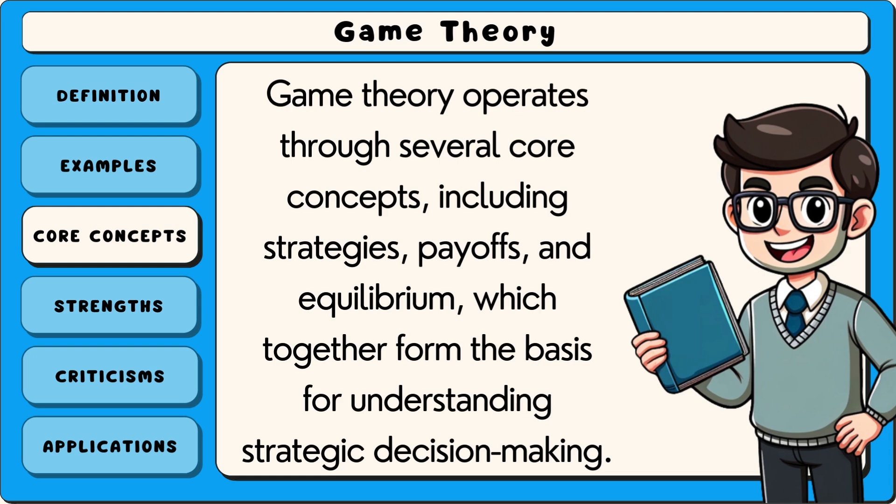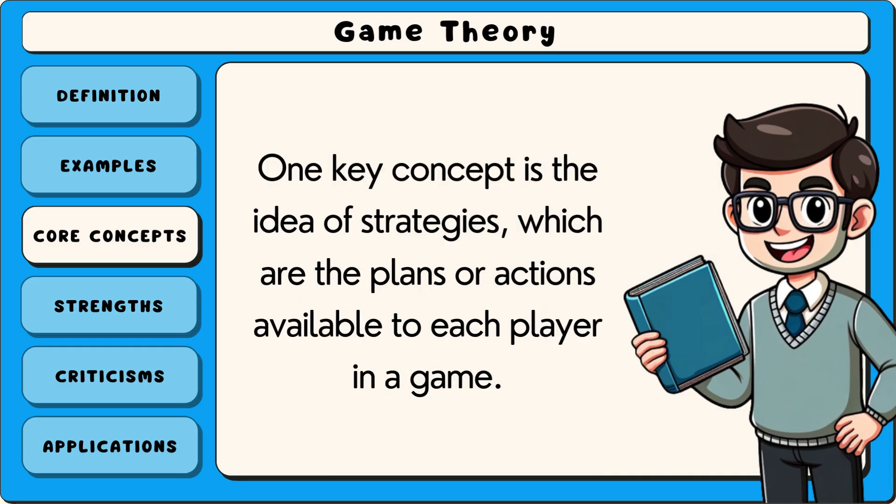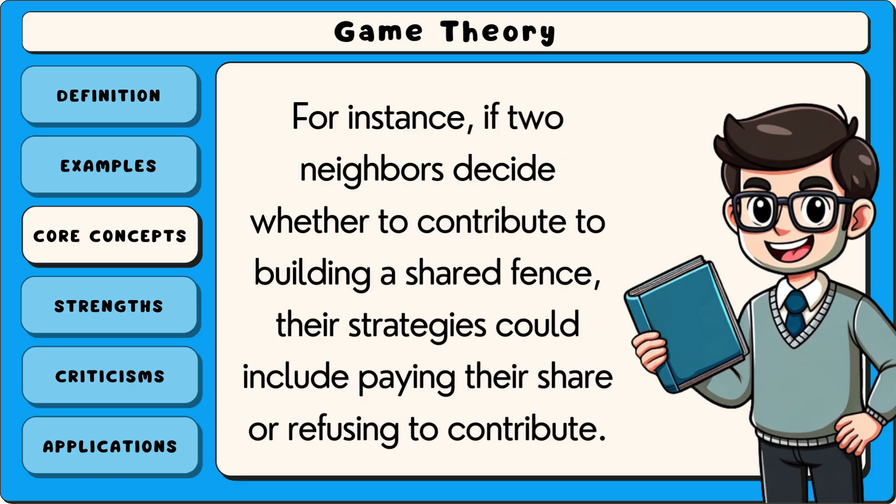Game theory operates through several core concepts including strategies, payoffs and equilibrium, which together form the basis for understanding strategic decision making. One key concept is the idea of strategies, which are the plans or actions available to each player in a game.